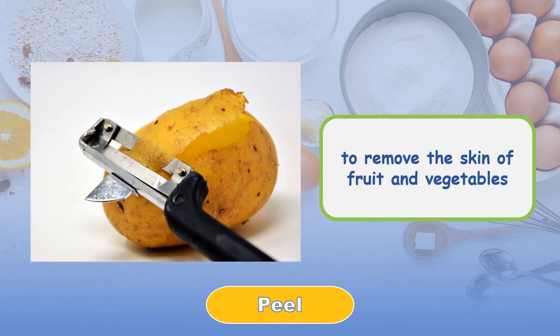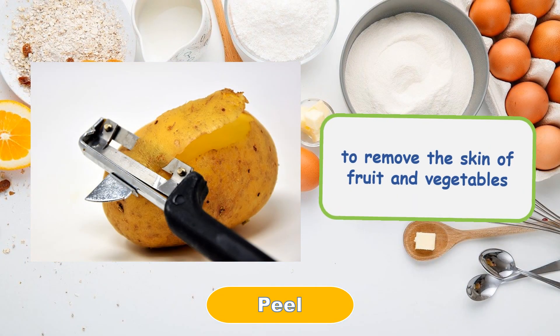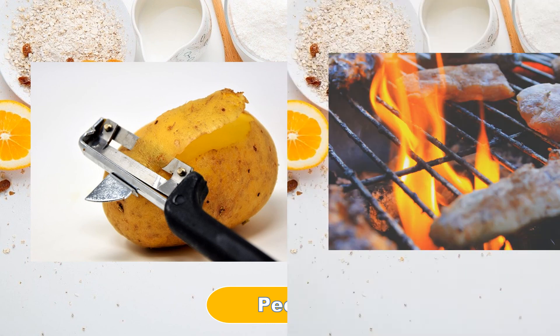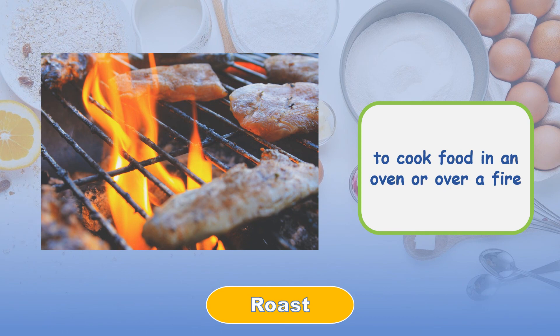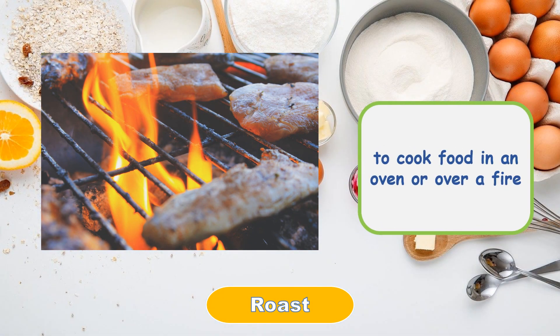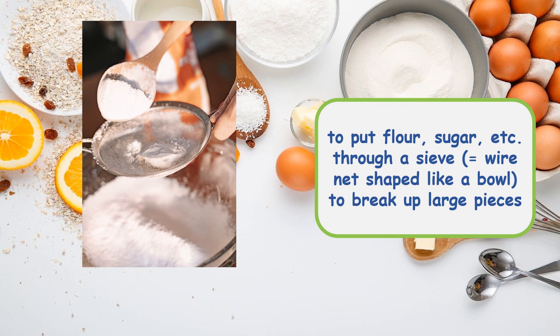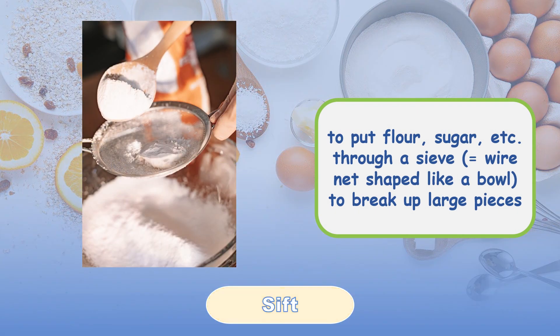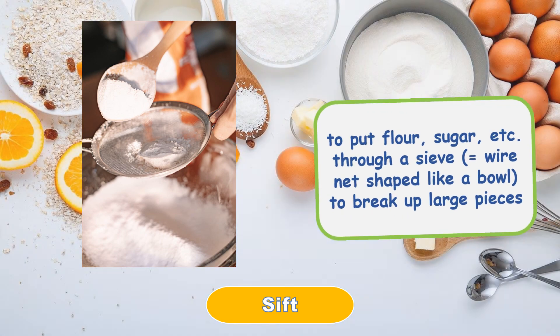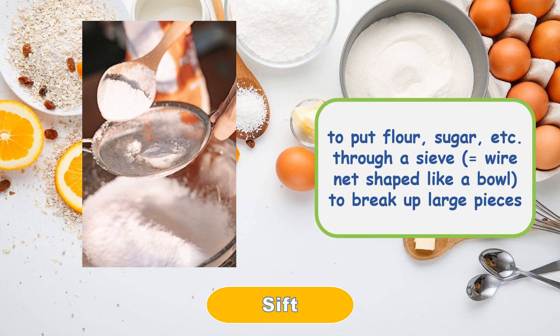Peel: to remove the skin of fruit and vegetables. Roast: to cook food in an oven or over a fire. Sift: to put flour, sugar, etc. through a sieve — a net shaped like a bowl — to break up large pieces.